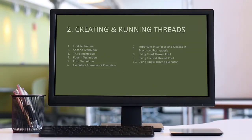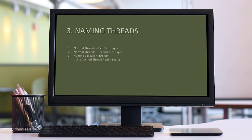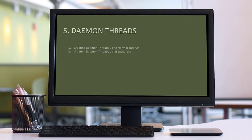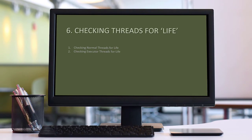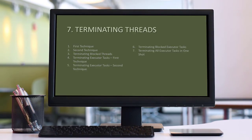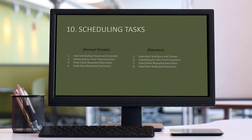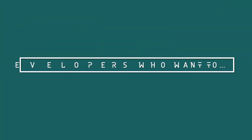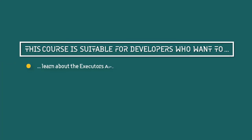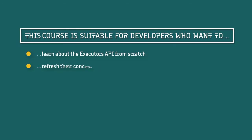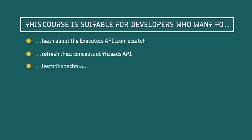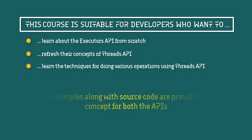In each section of the course, first the Threads API way of doing things is shown, and then the corresponding techniques using the Executors API are discussed. This will help you understand not only the advanced concepts of Executors, but also those of the normal Threads API. So this course is suitable for developers who want to learn about the Executors API from scratch. It is also beneficial for those who want to refresh their concepts or learn the techniques of doing various operations using the Threads API. Detailed examples along with source code are provided on every concept for both the APIs.